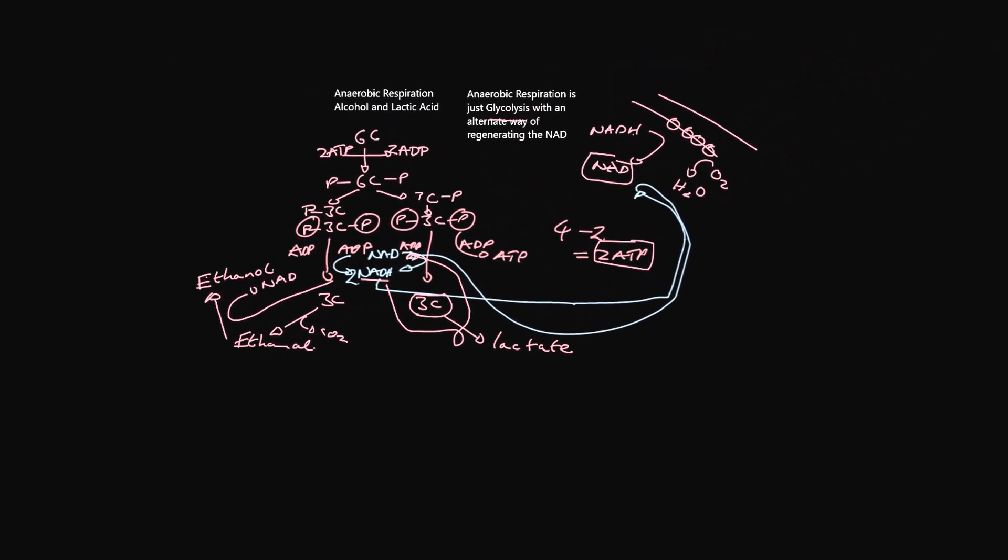So, final recap. Anaerobic respiration is just glycolysis with a different way of regenerating the NADs. You can either produce alcohol if you're a yeast or a plant or lactic acid if you're a human. It produces a net production of two ATPs, consumes glucose, does not produce any carbon dioxide, does not consume any oxygen and ends up producing ethanol if you're a plant or a yeast or lactic acid if you're a human.